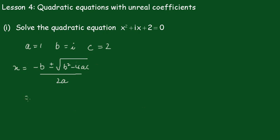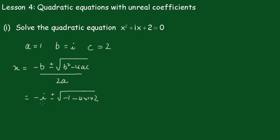Which is minus i plus or minus square root of b squared. Now b squared is i squared which is minus 1, plus 4 times 1 times 2 minus 4. So minus 4 times 1 times 2, all over 2 times 1, which is 2.